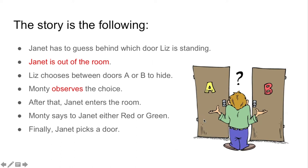The story is like this. Janet has to guess behind which door Liz is standing. Janet is in another room. Liz chooses between door A and B to hide. Monty observes, remember that, the choice. And after that, Janet enters the room. Monty says Janet is in red or green and finally Janet picks the door.